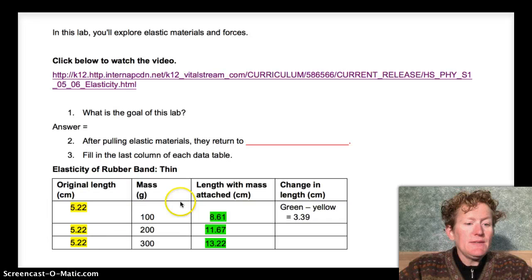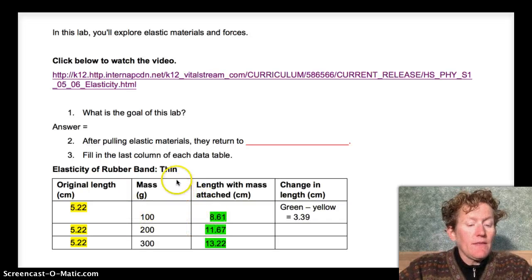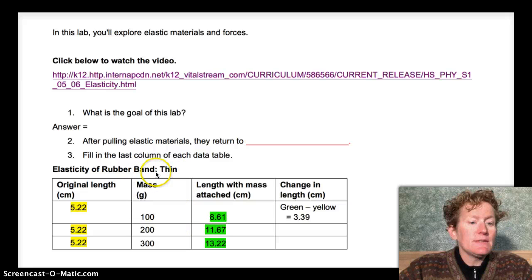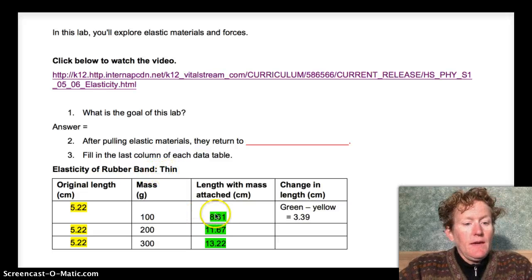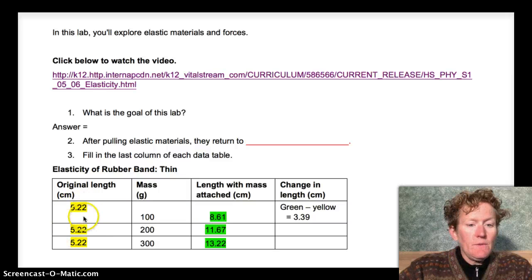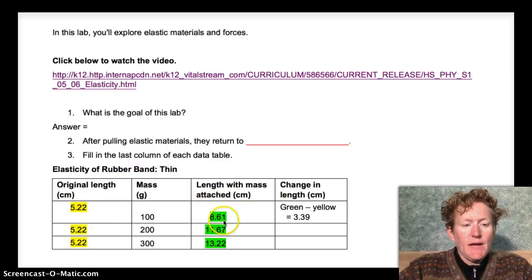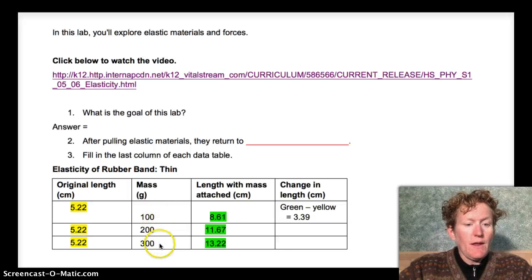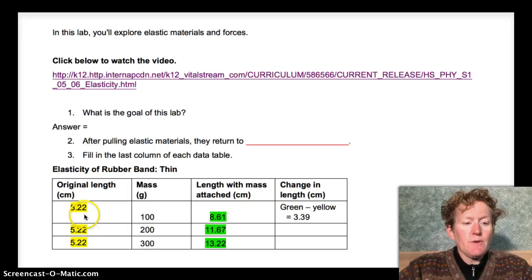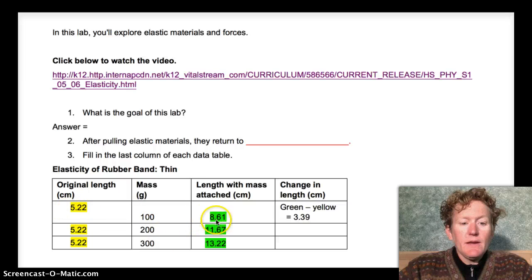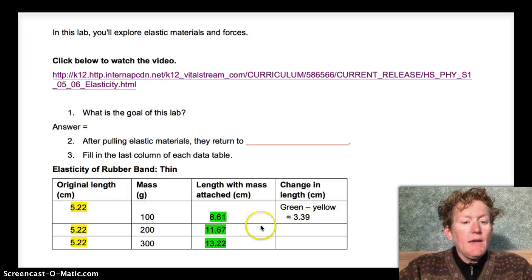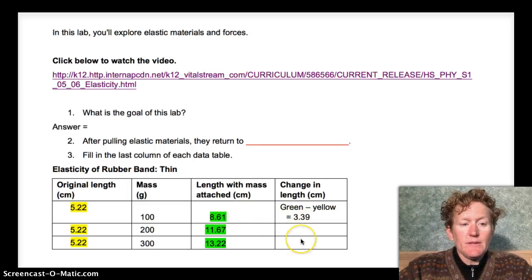For this lab, you have it pretty easy. The data is already in the tables for you. Here's the elasticity of the thin rubber band, and here is the original length in yellow. Here's the length with the mass attached. They tried 100, 200, and 300 grams. So all you need to do to find the change in length is take the green number and subtract the yellow number. You just need to grab a calculator, take 8.61, subtract 5.22. In this case we get 3.39. I'm going to let you do the rest of the numbers in this table.